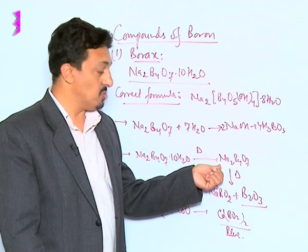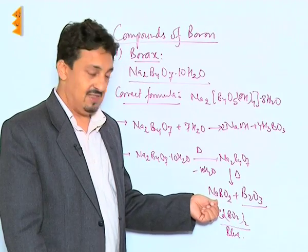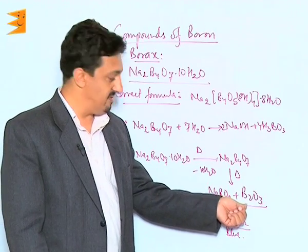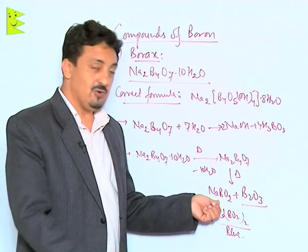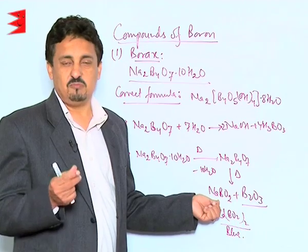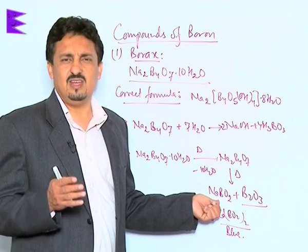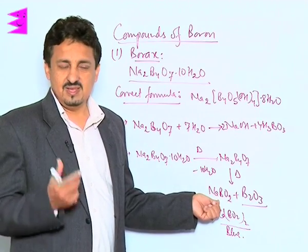It's called sodium metaborate, which on further heating leads to the formation of sodium metaborate NaBO2 and B2O3. This B2O3 is called boric anhydride. This NaBO2 takes the shape of a glassy bead on solidification, a transparent glassy bead.